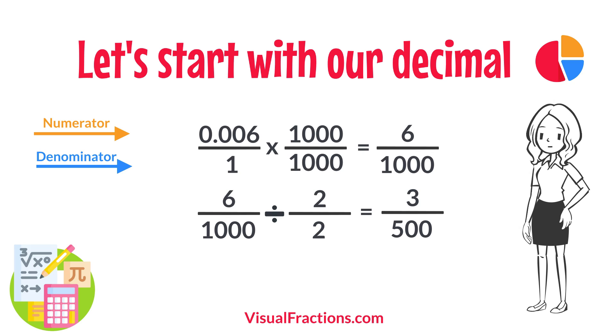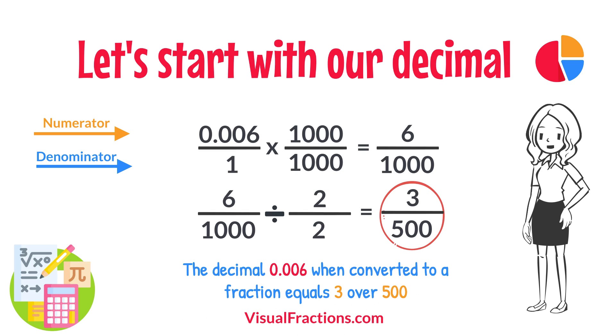So, 6 1,000ths simplifies neatly to 3 500ths. And there you have it. The decimal 0.006 when converted to a fraction equals 3 500ths.